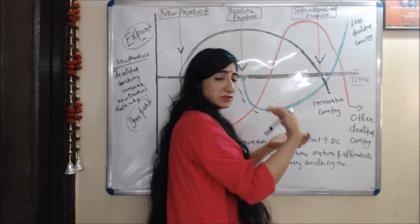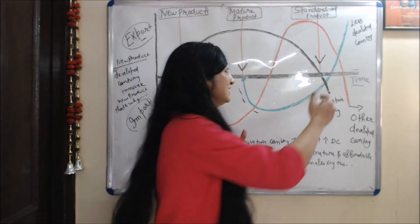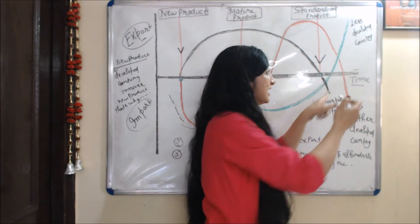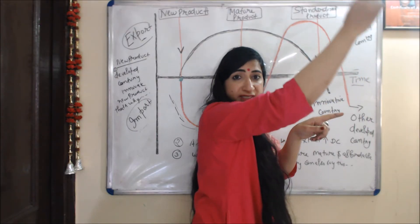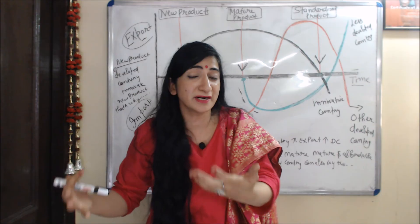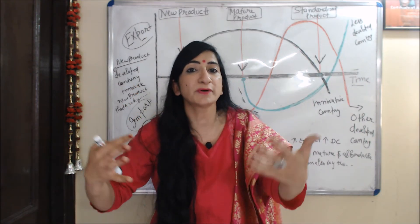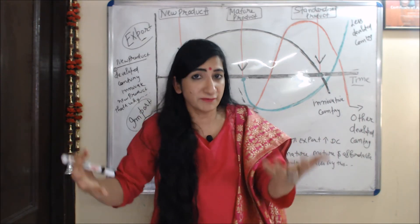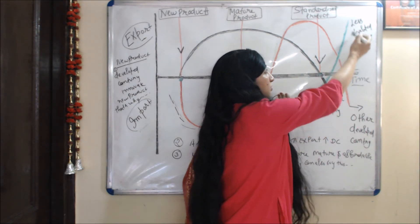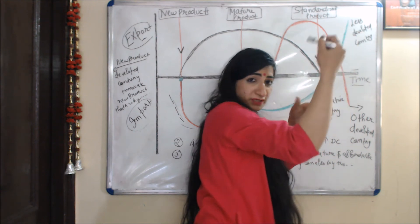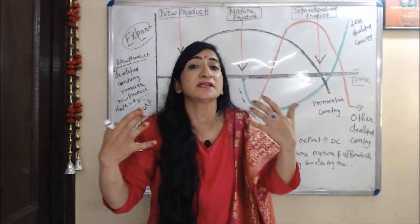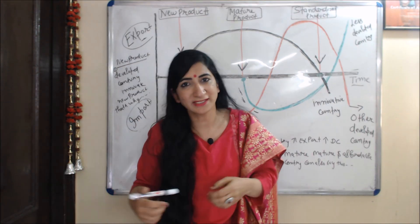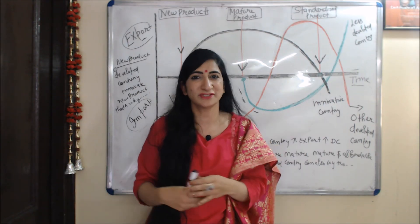Finally, slowly the product becomes standardized. You can see the green curve representing less developed countries — their exports are increasing because as the product becomes standardized, less developed countries are also doing production of these goods and increasing their exports to other developed countries. This is all about this theory. I think you got it — thank you so much for watching this video.